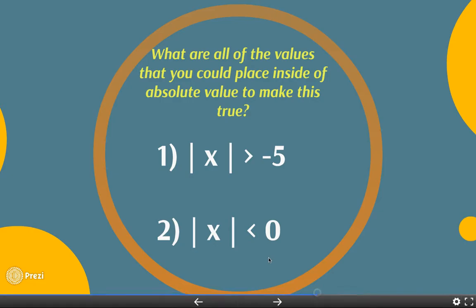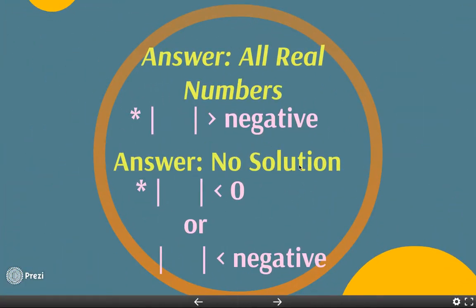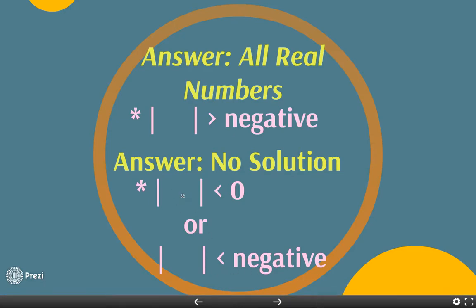To recap: anything where absolute value is greater than a negative — everything will work, so we call this all real numbers. The second case is when absolute value is less than zero or less than a negative number — that gives no solution, because nothing you put in for x will ever make it work. These are your two special cases to watch for.